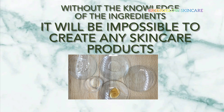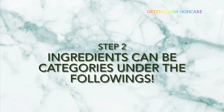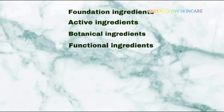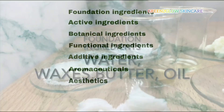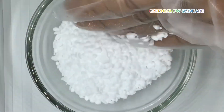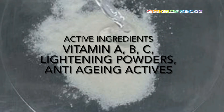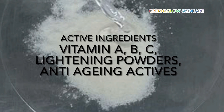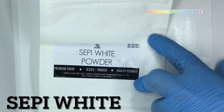Ingredients can be categorized under the following — some ingredients can also fall into two or more of these categories. We have: foundation ingredients, active ingredients, botanical ingredients, and functional ingredients. Under foundation we have water or hydrosol, waxes, and oils. Under active ingredients we have vitamin A, B, C, lightening powders, allantoin, sym-white, licorice, and so on.